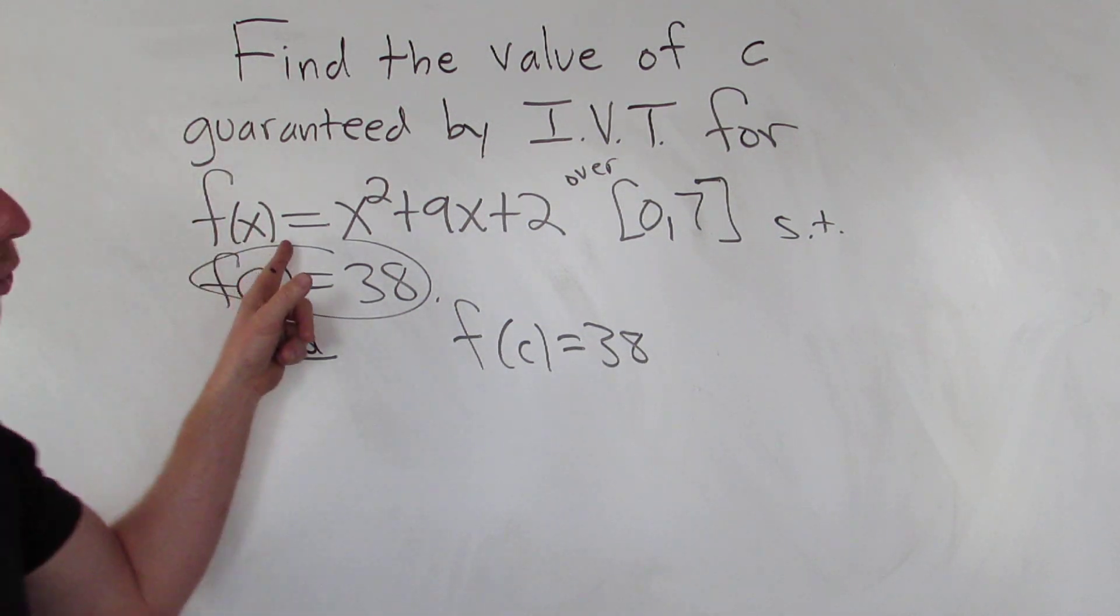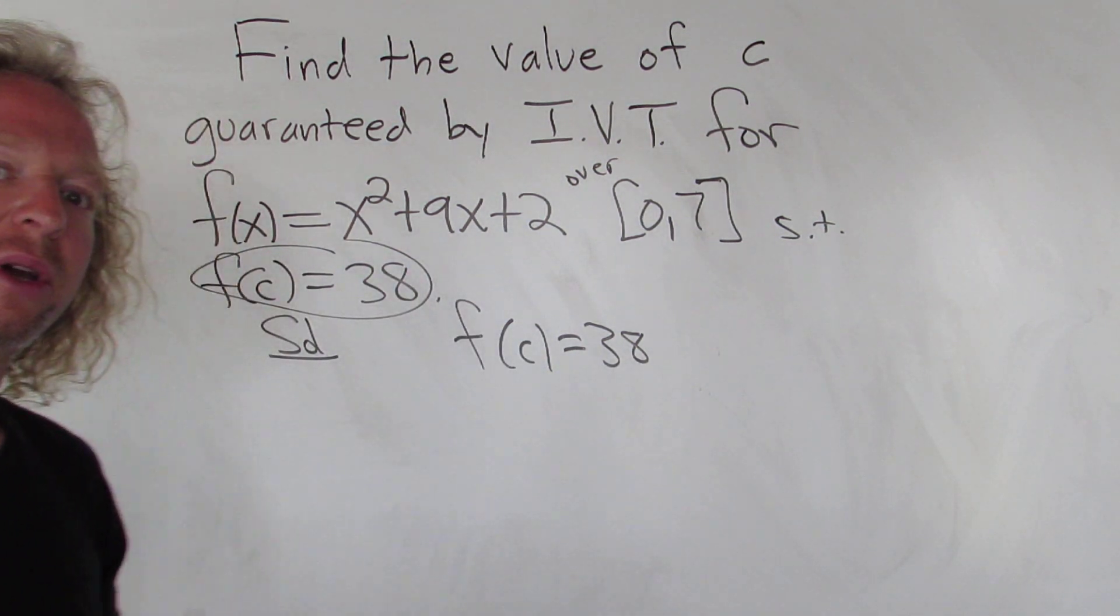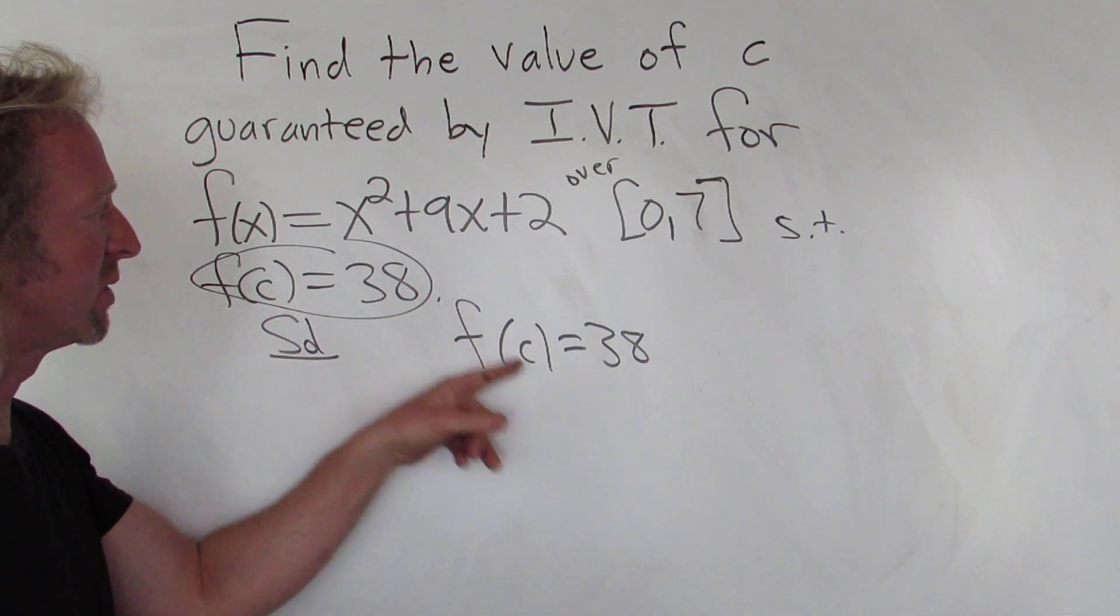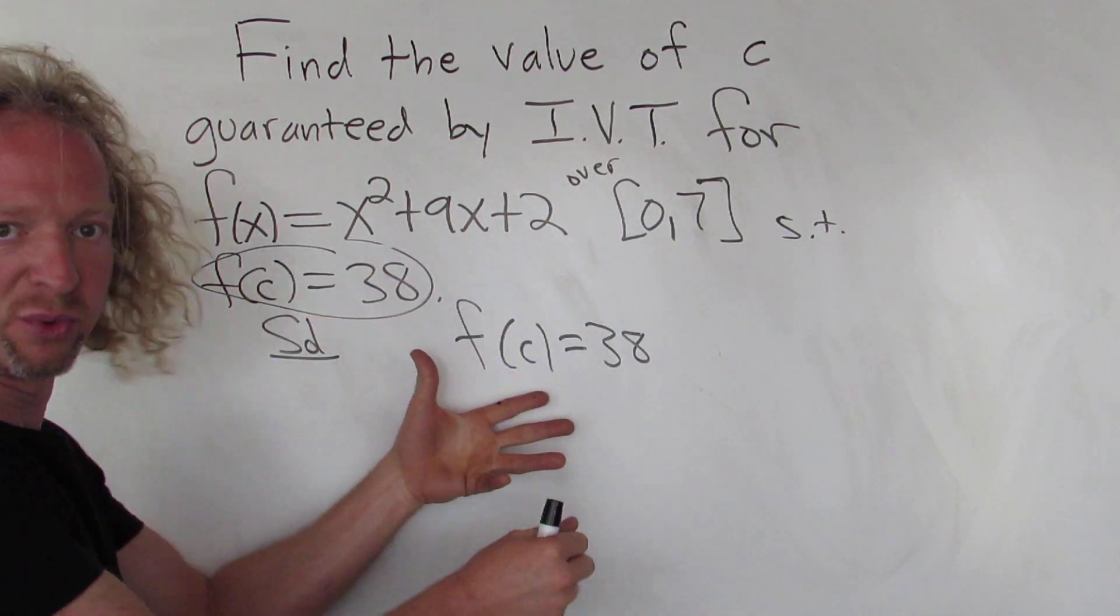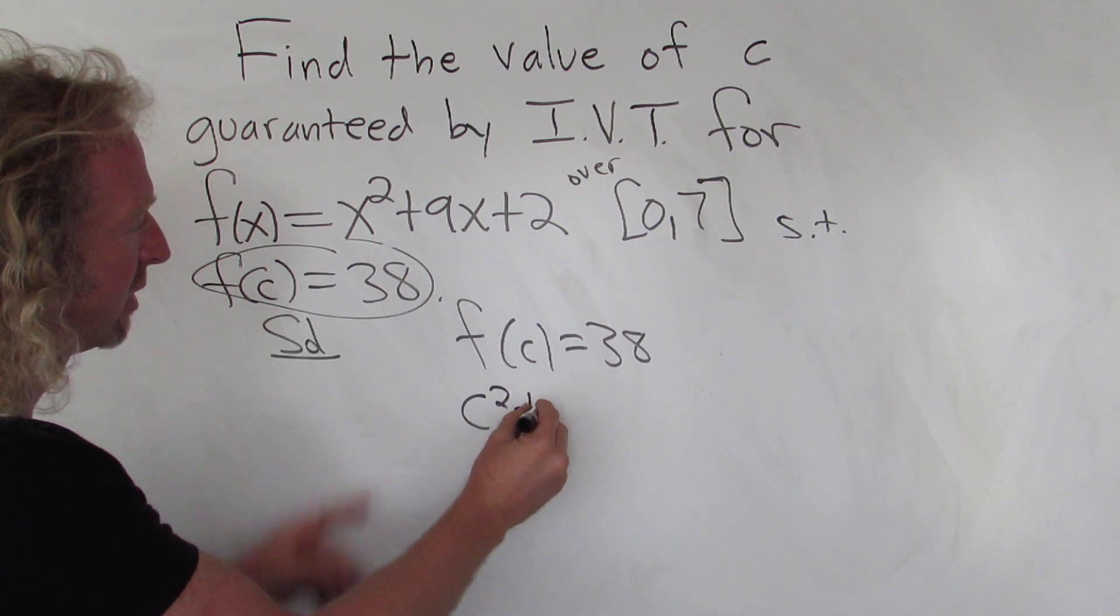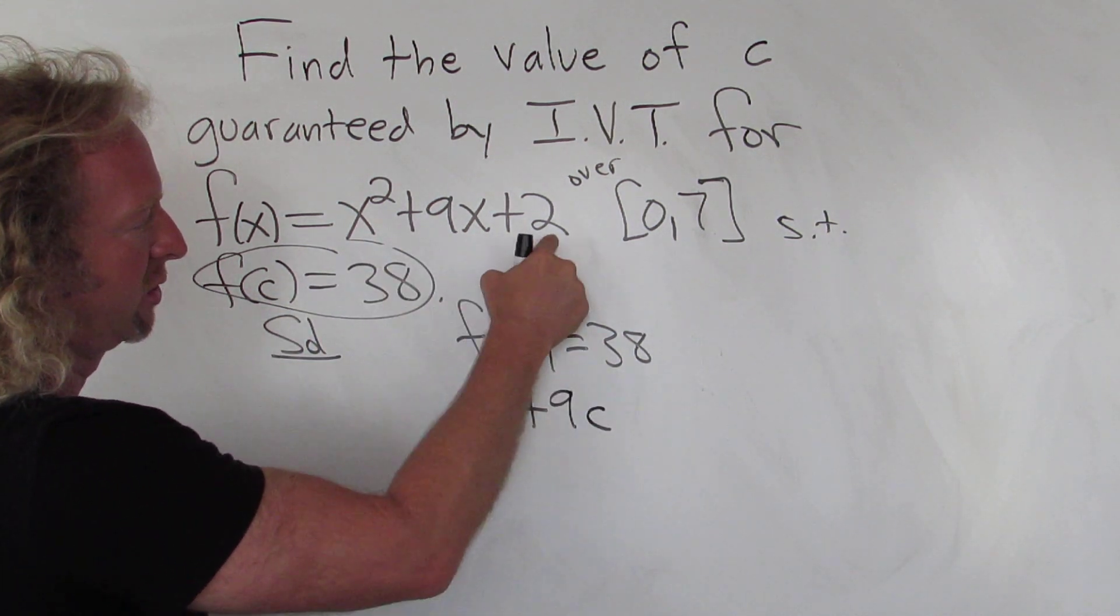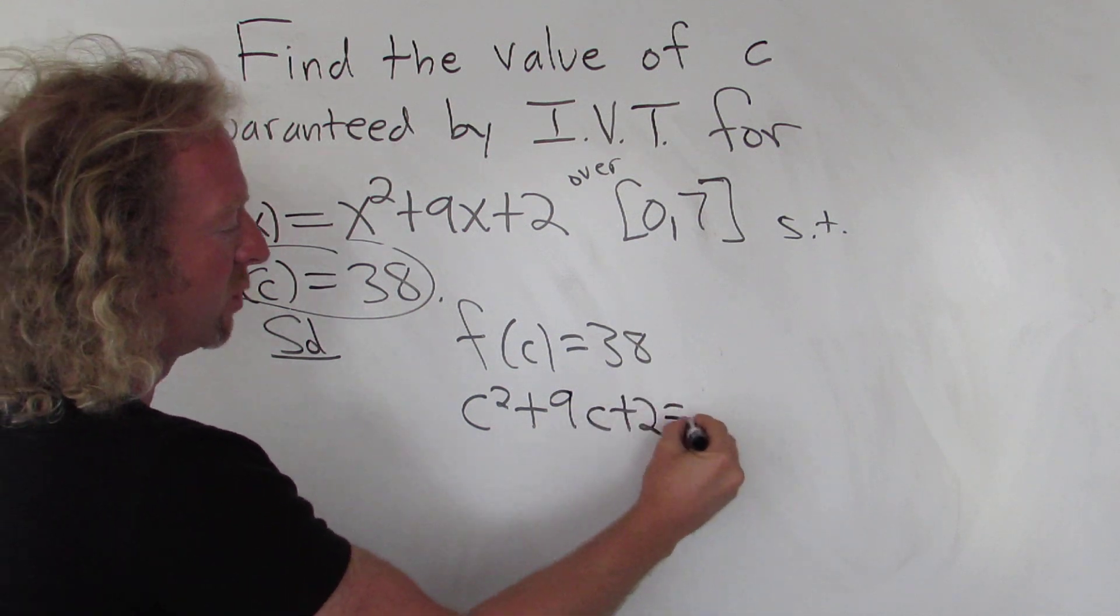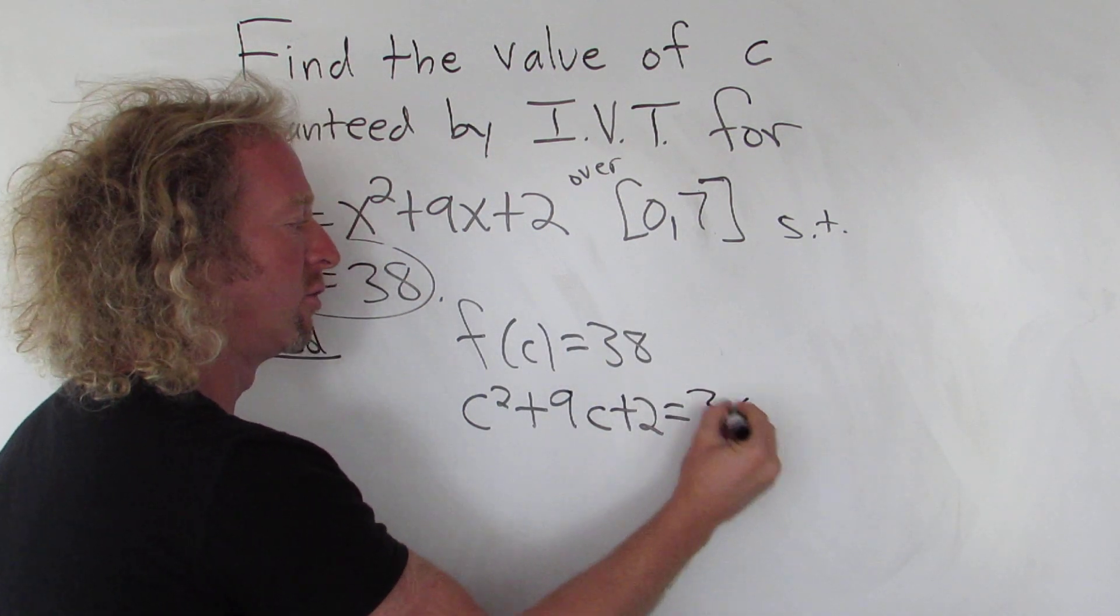So f of c equals 38. So f of x is x squared plus 9x plus 2. So in this problem we have f of c, so all we do is replace all of the x's with c's. So it'll be c squared plus 9c plus 2. That's equal to 38. Good stuff.